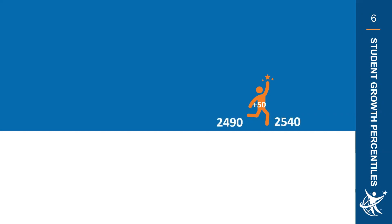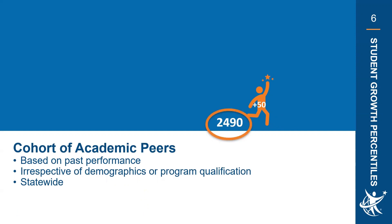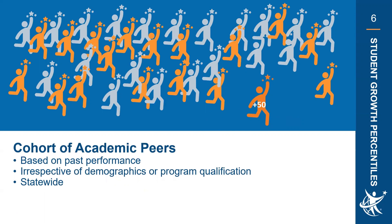So how are SGPs calculated? Let's take our sample student who went from 2490 to 2540 — a 50 scale score point gain. The state finds a cohort of academic peers based on that student's prior performance, selecting students from across the state with no consideration of their location, demographic, or program background. The amount of growth is then determined for every student in that cohort.